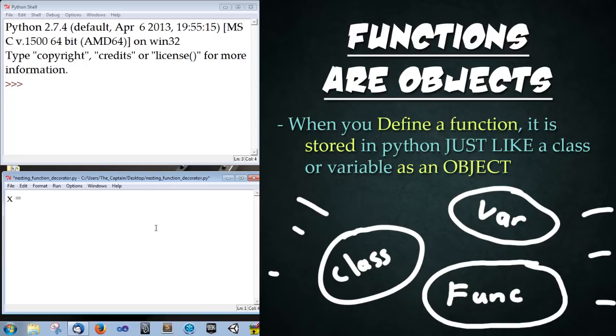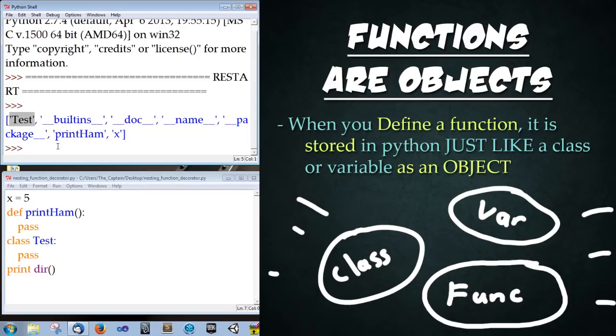So I'm going to type x equals 5 def print ham open close parentheses colon pass and then create a class called test colon enter pass and then print dir. And let's go ahead and press f5 to run it.